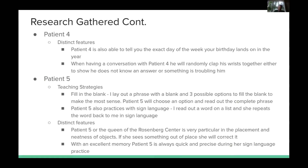With patient five, I used fill-in-the-blank exercises — I would lay out a phrase with a blank and three possible options, and patient five would choose an option and read out the complete phrase. She also practiced sign language: I would read out a word and she would repeat it in sign language. Patient five is known as the queen of the Rosenberg Center — she is very particular about the placement and neatness of objects and will instantly correct anything out of place. With her excellent memory, she is always quick and precise during sign language practice.